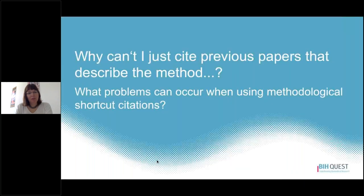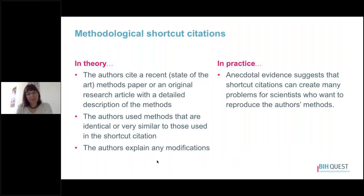Why can't I just cite a previous paper describing the methods? In theory, the authors are citing a recent state-of-the-art methods paper or original research article with a detailed description of the methods, the methods used are very similar or identical to those in the shortcut citation, and the authors briefly explain any modifications. However, in practice, anecdotal evidence suggests that shortcut citations can create many problems for scientists who want to reproduce authors' methods.